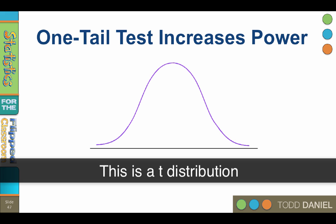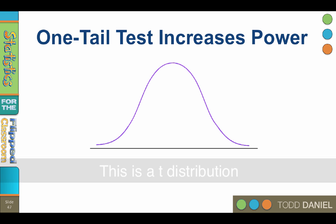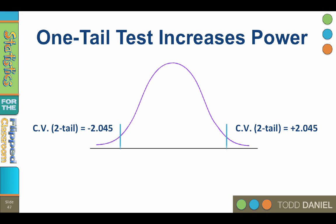This is a t-distribution. It looks like our old friend the normal curve, but with a subtle difference in its shape that is very difficult to detect here. If we were doing a two-tailed test with 29 degrees of freedom, the critical values would be positive and negative 2.045. But we are doing a one-tailed test with 29 degrees of freedom, so the critical value is a positive 1.699.